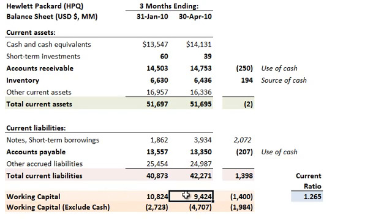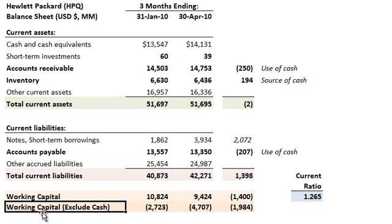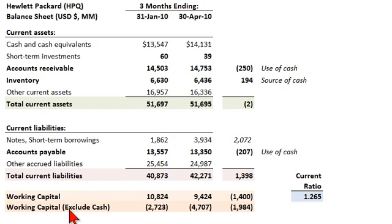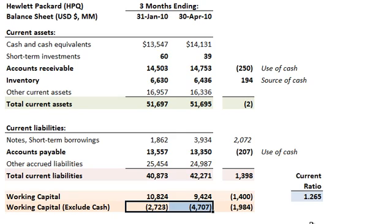That $9.4 billion is the solvency perspective that includes the cash account. From an analytical or valuation perspective, we want to exclude cash. Working capital excluding cash is most recently negative $4.7 billion, because this definition excludes the large cash account of $14.1 billion. From the valuation perspective, we exclude cash because we want to assess how much cash the working capital — the capital funding ongoing operations — is consuming or throwing off.